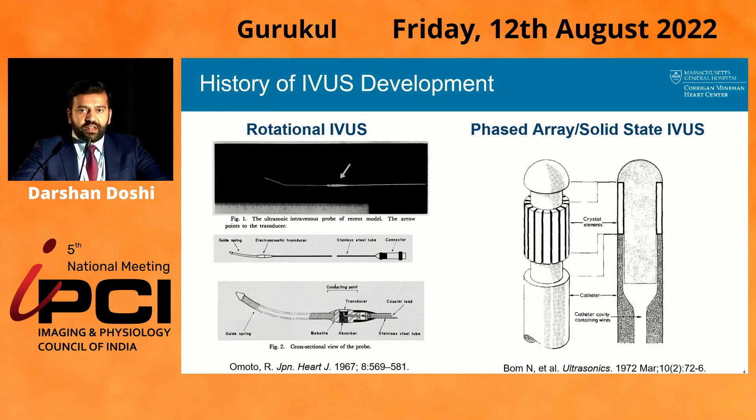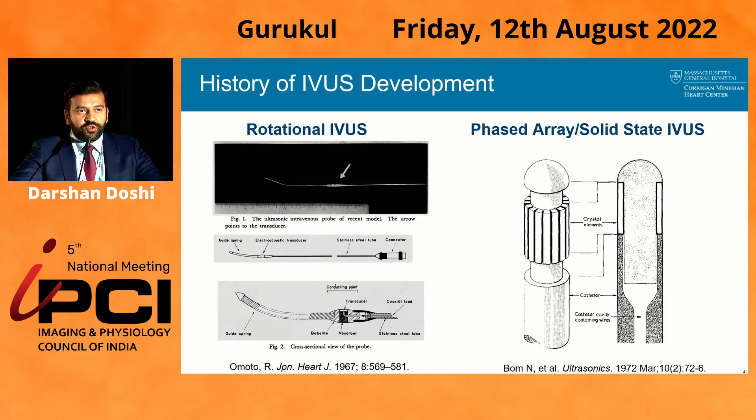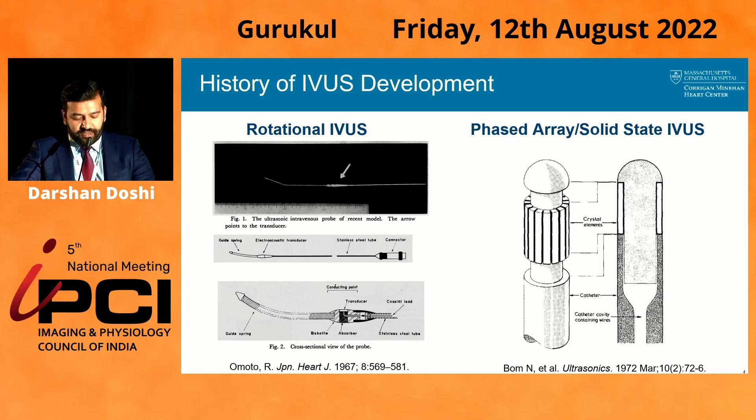It would be another decade or so before the first IVUS devices were utilized — first in the large chambers, then the great vessels, and then subsequently in the coronary vasculature. On the left is the rotational IVUS system, and on the right is the phased array, which was developed a few years later in the 1970s. There are differences in how they acquire images and therefore the quality of the images ascertained.